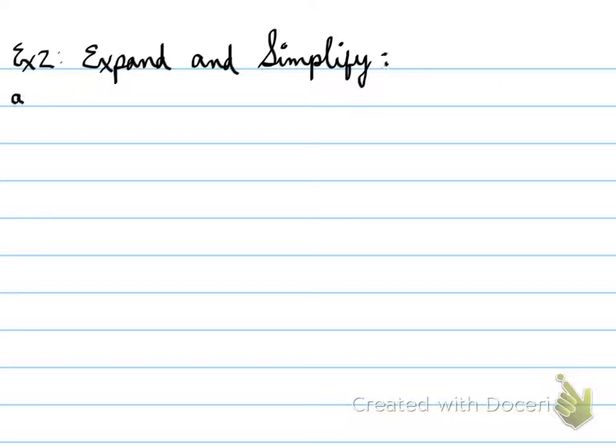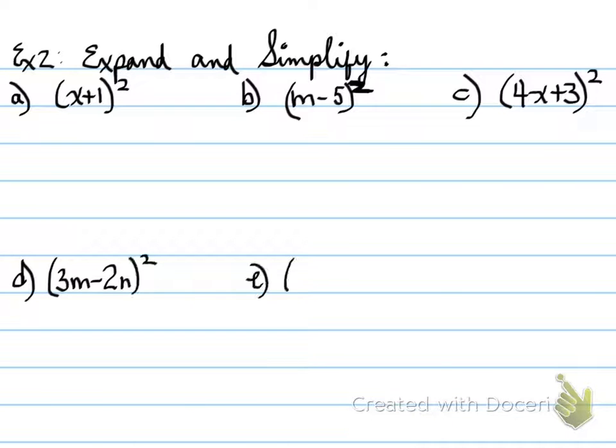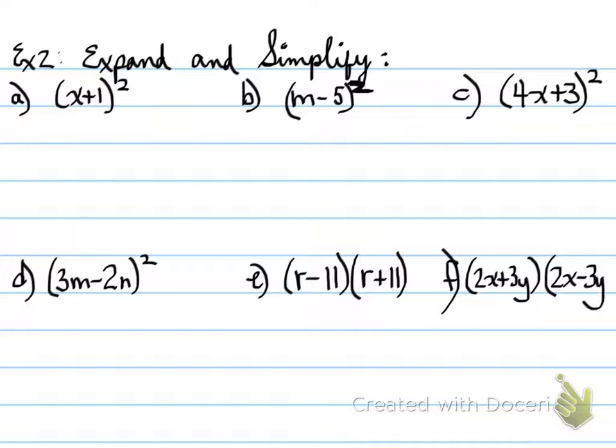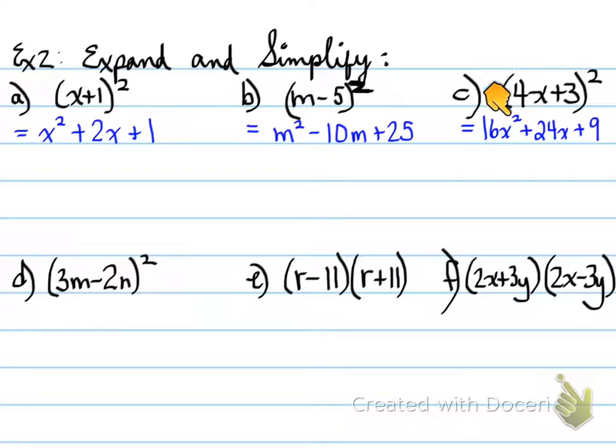Example number two: you're asked to expand and simplify. (x+1)² you can do yourselves, but we're going to look at questions that involve not just perfect squares but also difference of squares. Part a will expand to x² + 2x + 1. Part b will expand to m² - 10m + 25. Part c will expand to 4x all squared which is 16x², 4x times 3 times 2 gives us 24x, and 3² gives us 9.